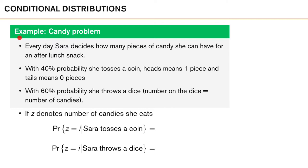Let's look at the toy example to hopefully make things a bit more clear. In this toy example, Sarah decides every day how many pieces of candy she can have for an after-lunch snack. To make things a bit more interesting, she decides how many candies she gets at random using an intricate scheme involving both tossing a coin and rolling a dice. So with 40% probability she tosses a coin — heads means she gets one piece of candy, tails means she gets zero pieces. With 60% probability she throws a dice, and whatever number comes up is how many candies she gets that day.